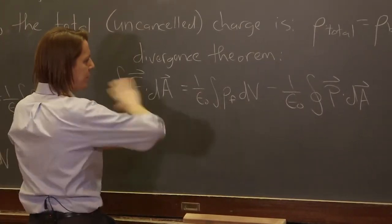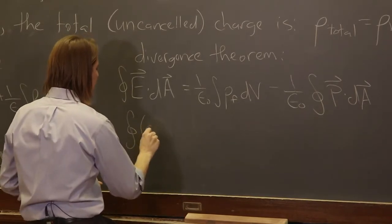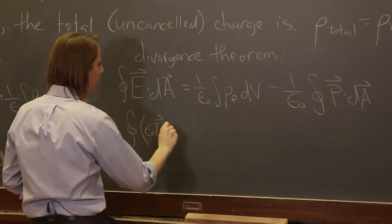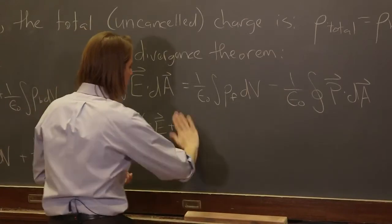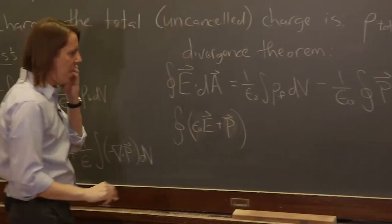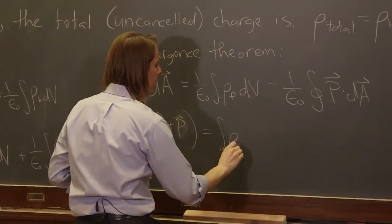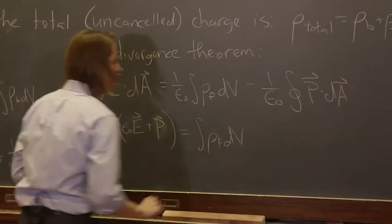So we've got epsilon naught E plus P equals the integral of rho free dV. The epsilon naughts went away.